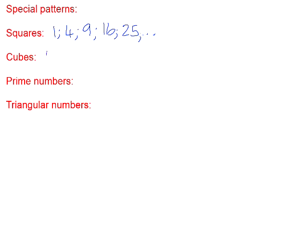The pattern of cube numbers: 1 cubed is 1, 2 cubed is 8, 3 cubed is 27, 4 cubed is 64, 5 cubed is 125. And we could carry on with our cube numbers as well.